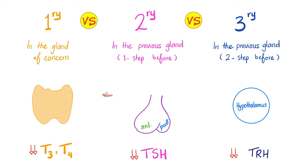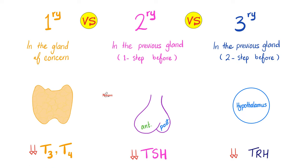Let's say that we have a patient who has low levels of thyroid hormone. What do you call this? Hypothyroidism. Now, what's the cause of this hypothyroidism? It could be a problem in the thyroid gland, the anterior pituitary, or the hypothalamus. If the problem is in the thyroid gland, we call this primary hypothyroidism. If the problem is one step ahead in the anterior pituitary, we call this secondary hypothyroidism. If the problem is two steps ahead, we call this tertiary hypothyroidism. The end result of all of this is a patient with low levels of thyroid hormone and therefore a low metabolic rate.